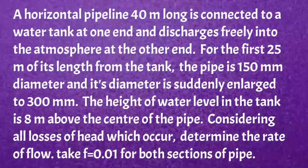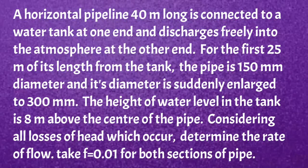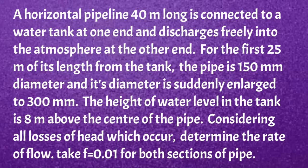I will read the given problem. A horizontal pipeline 40 meters long is connected to a water tank at one end and discharges freely into the atmosphere at the other end. For the first 25 meters of its length from the tank, the pipe is 150 mm diameter and its diameter is suddenly enlarged to 300 mm. The height of water level in the tank is 8 meters above the center of the pipe. Considering all losses of head which occur, determine the rate of flow. Take F equal to 0.01 for both sections of the pipe.